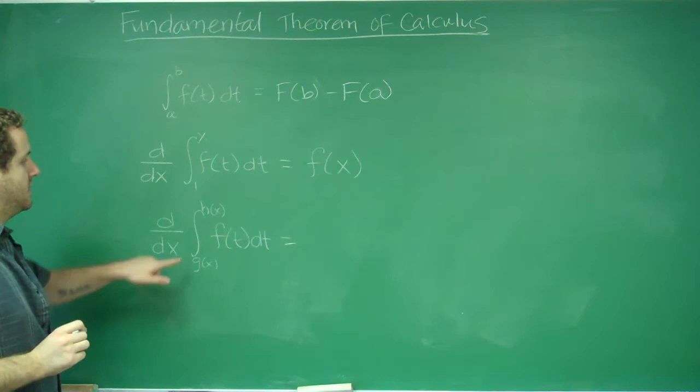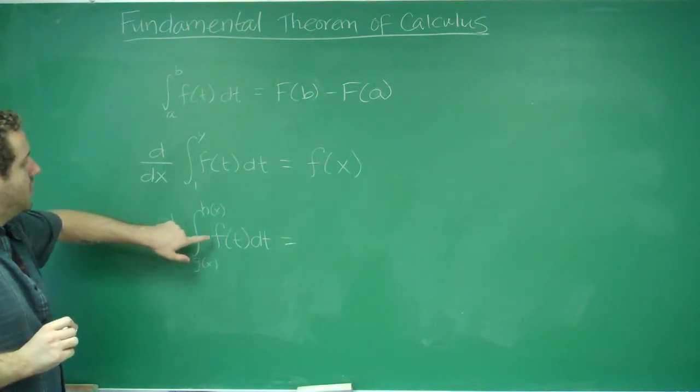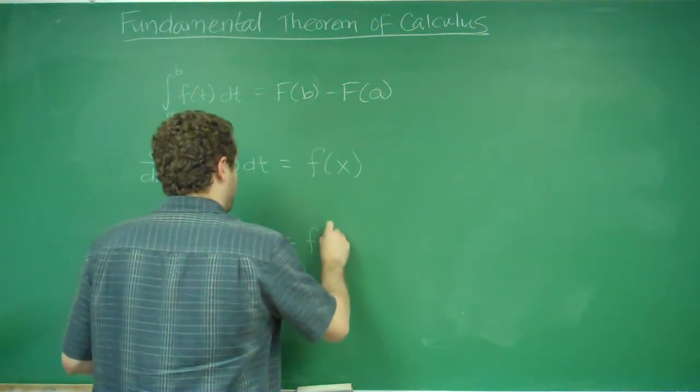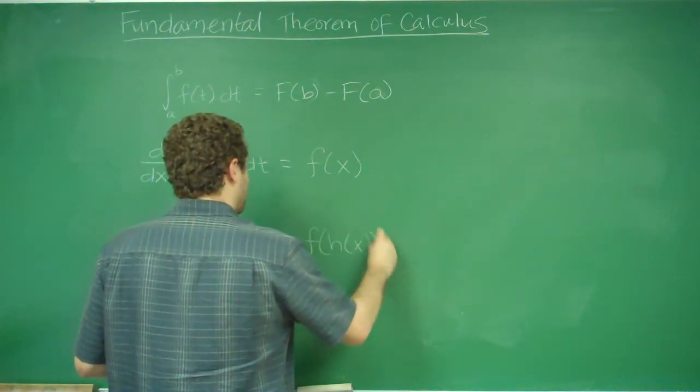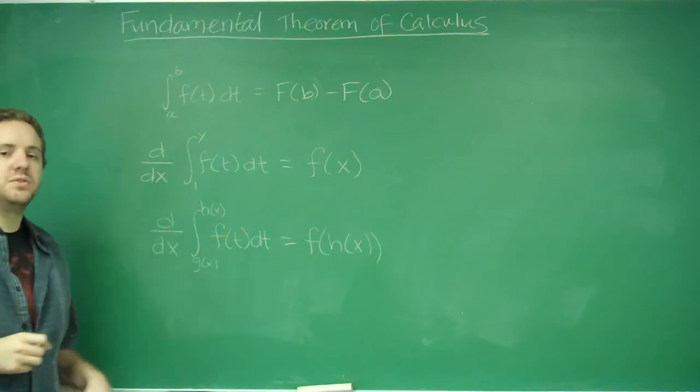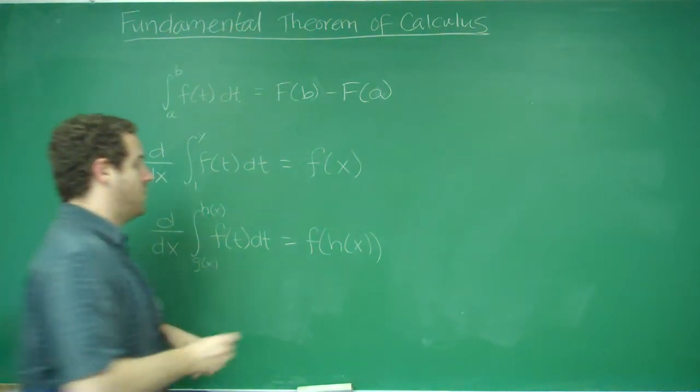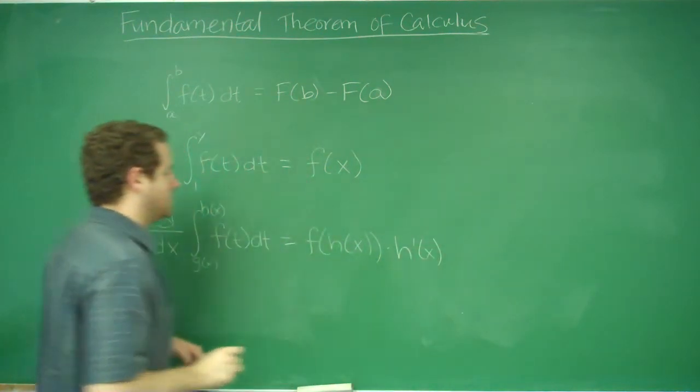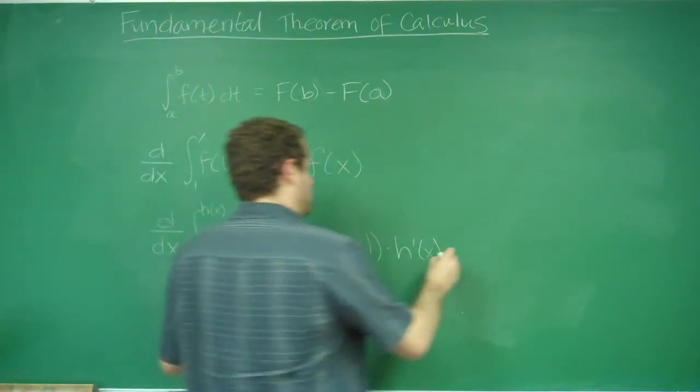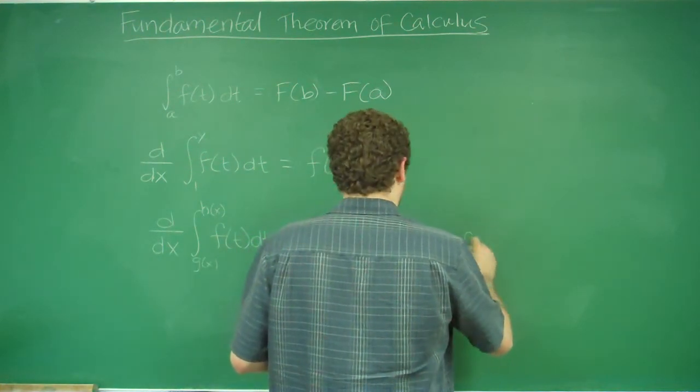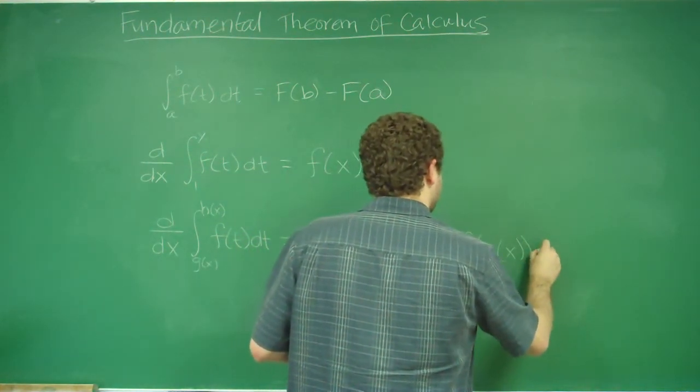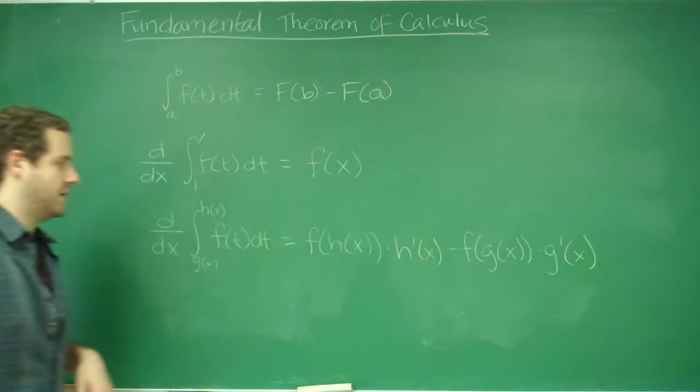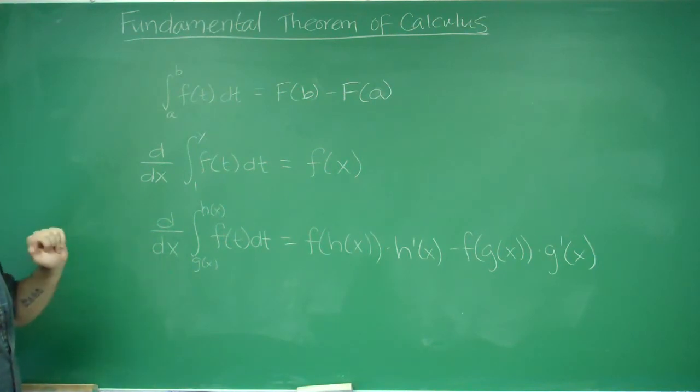How we evaluate this is you have to evaluate this function at the upper bound. So we have f of h of x times the derivative - you can think of it, it's kind of like chain rule - times the derivative of what we plugged in there, h prime of x. And then we do the same thing for the bottom: minus f of g of x times g prime of x. And this is what the fundamental theorem of calculus states.